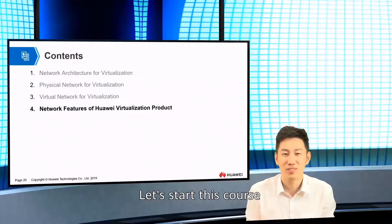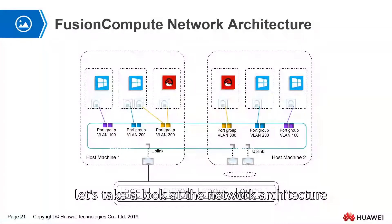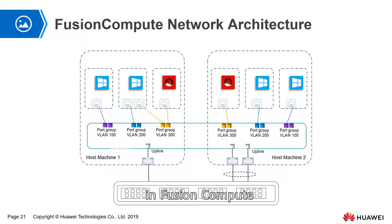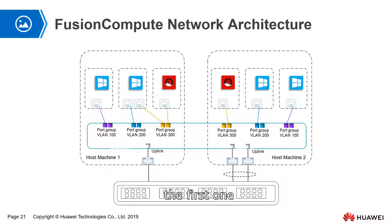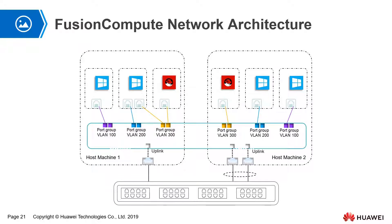Let's start this course. Let's take a look at the network architecture in Fusion Compute. There are several keywords. The first one is the port group, and the second one is uplink.